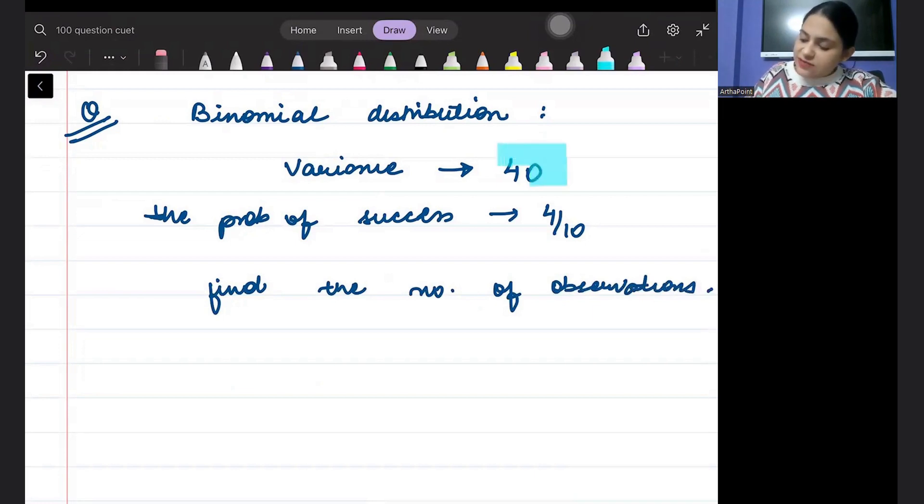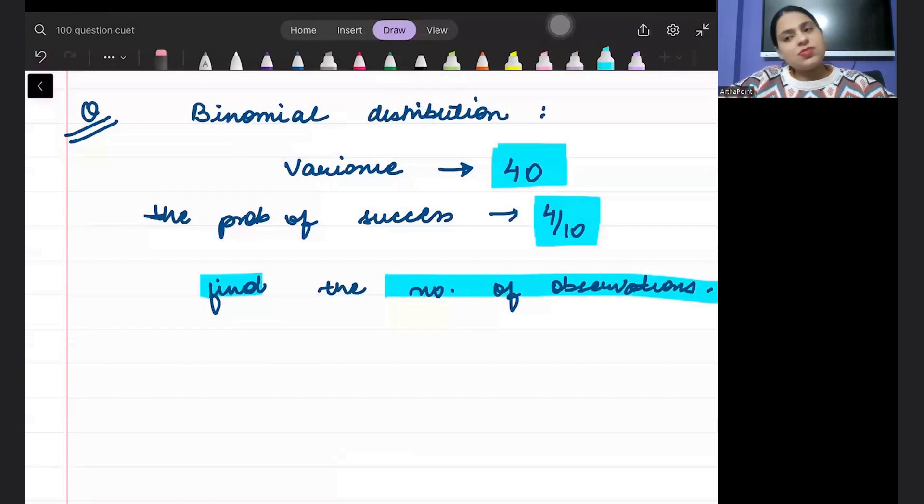I have kept variance at 40. I have kept the probability of success at 4 by 10 and I want you to find the number of observations for me. Just post your answer. Thank you.